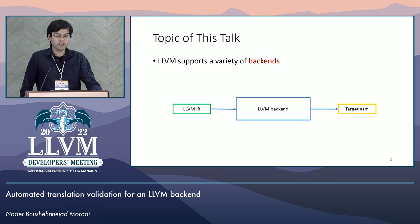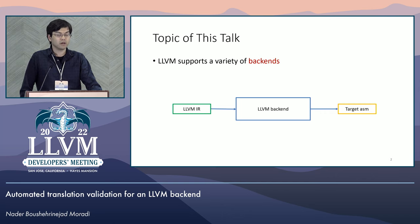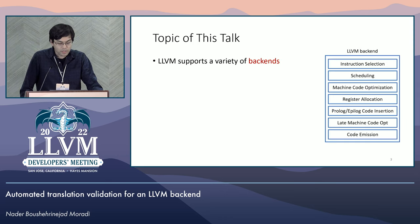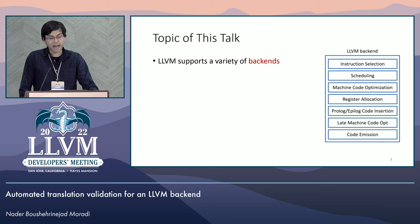LLVM supports a variety of different backends. Looking at the repo at the moment, we see 24 backends just in the upstream branch. At a high level, a backend takes the input LLVM IR and outputs target-specific machine code. Under the hood, a lot of things are done so that a backend can generate correct and performant code.